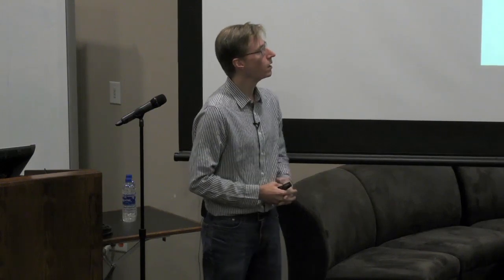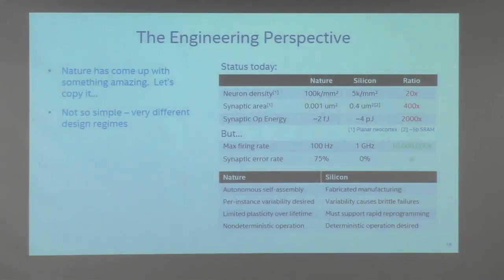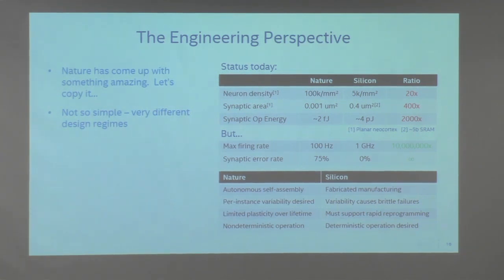The area density disadvantages are the more troubling ones — that's the critical constraint because it limits what problems we can run. As you scale up, that's when we see really compelling gains for this type of fine-grained parallel architecture. The energy differential is even bigger, but we're so far off compared to nature in terms of everything a brain is doing that I don't actually regard the 2000x energy gap as the most critical issue — it's the density we have to offset.